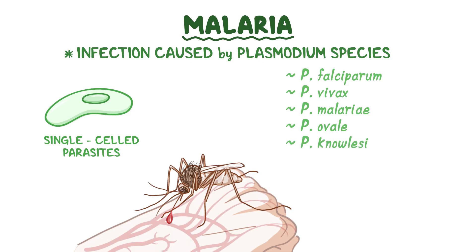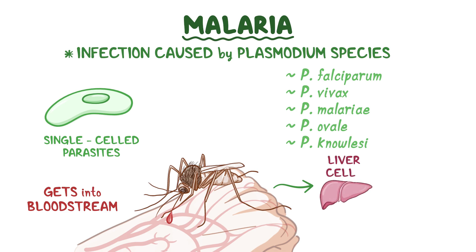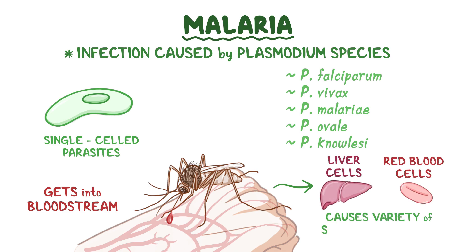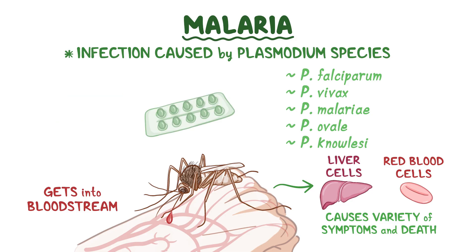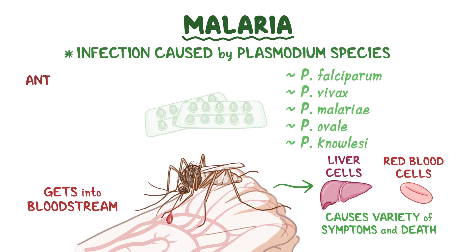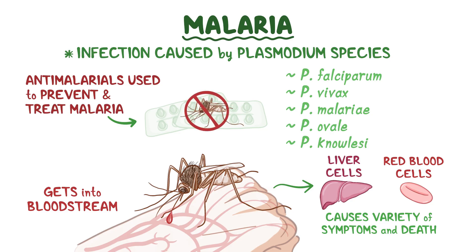Once the plasmodium gets into the bloodstream, it infects liver cells and red blood cells, which causes a variety of symptoms and sometimes even leads to death. We rely on groups of medications, commonly known as antimalarials, in order to prevent and treat malaria.